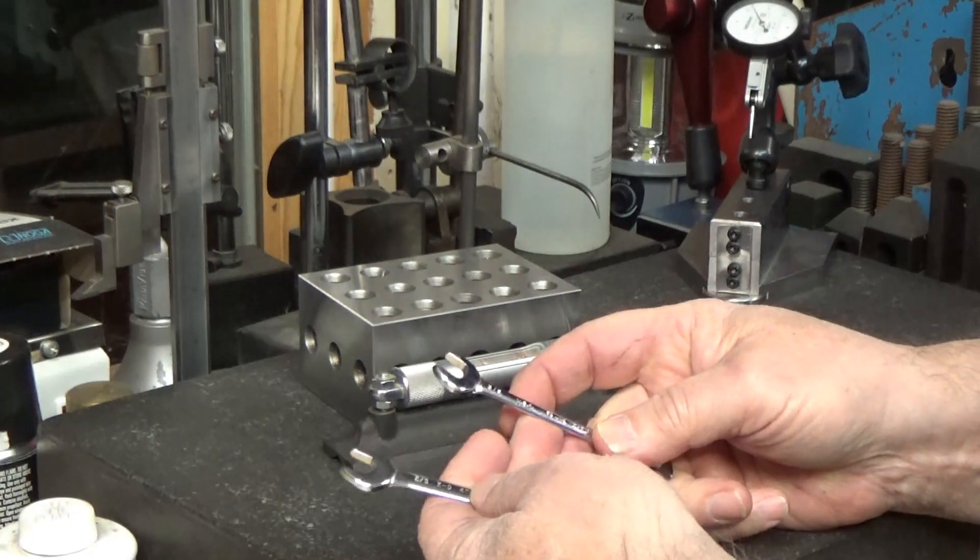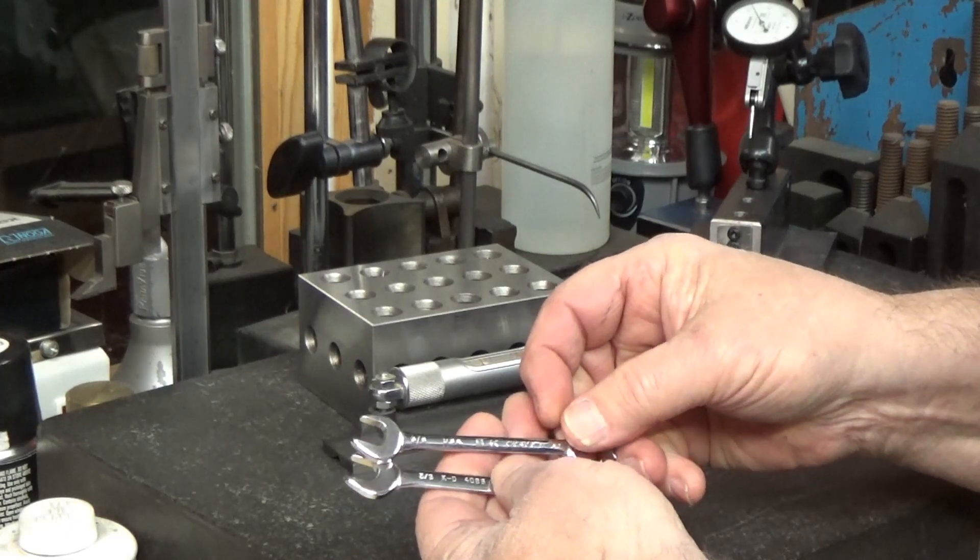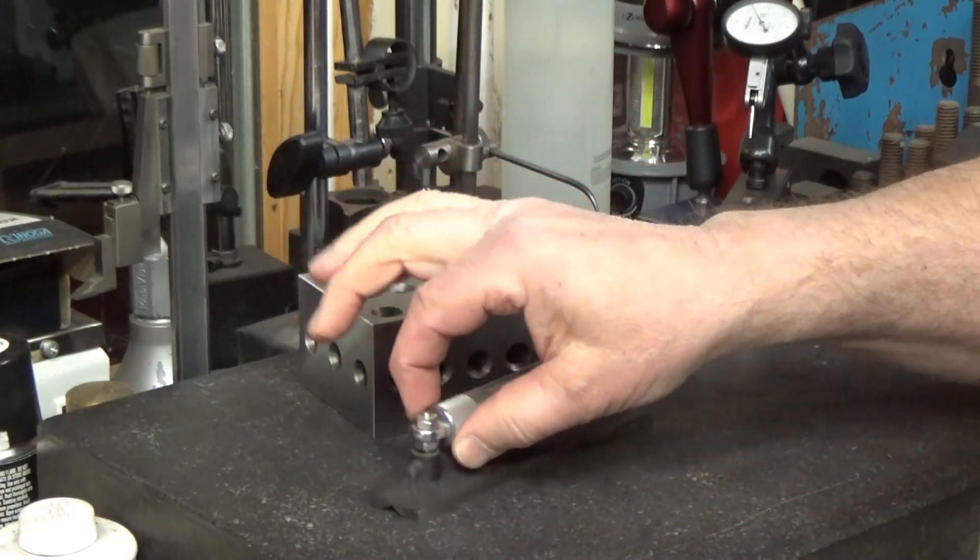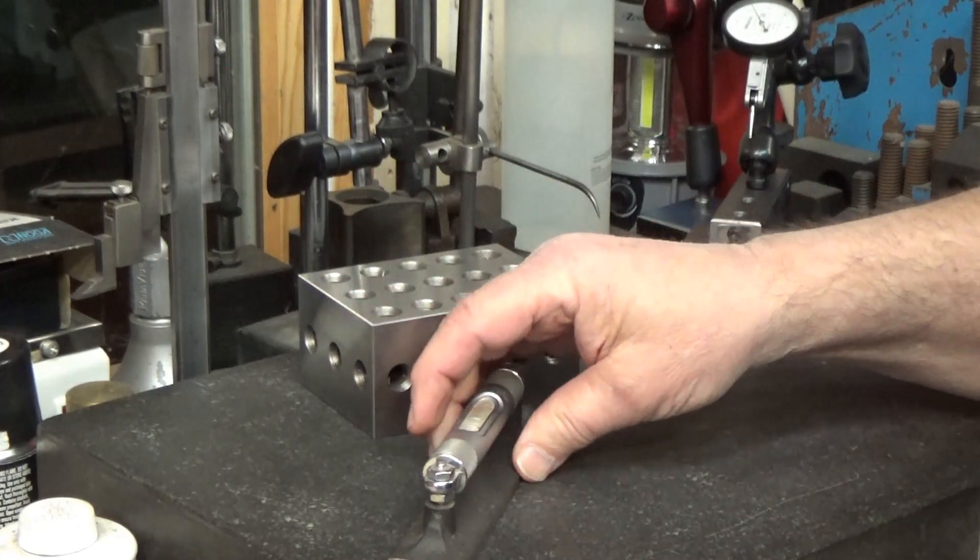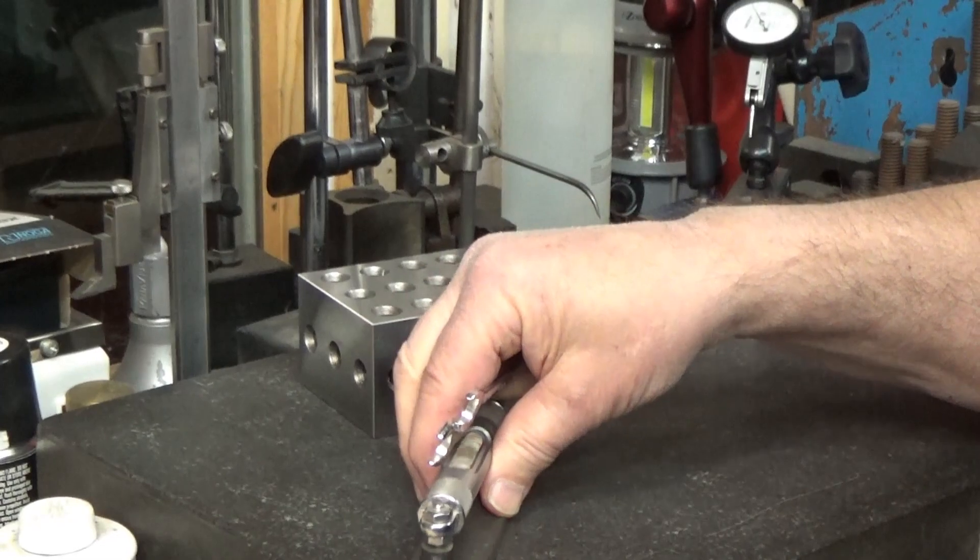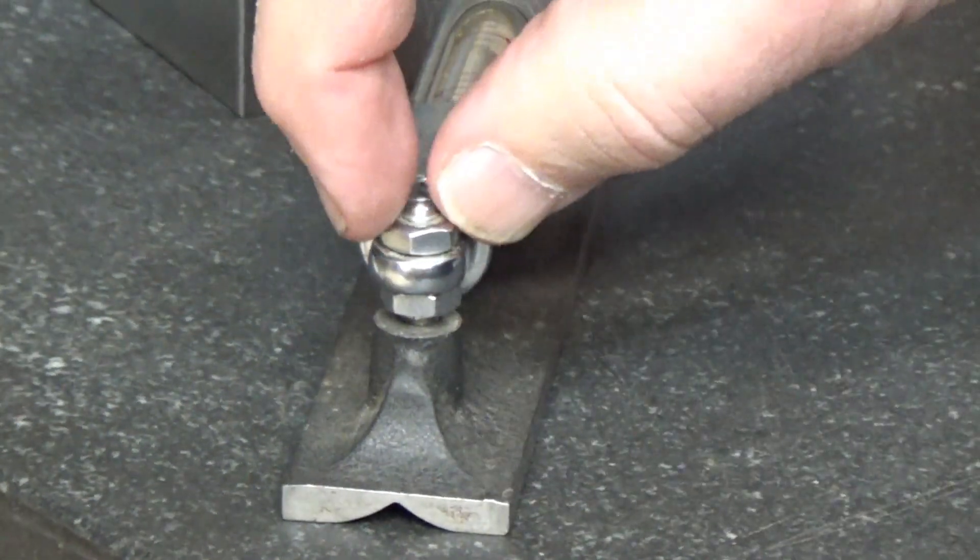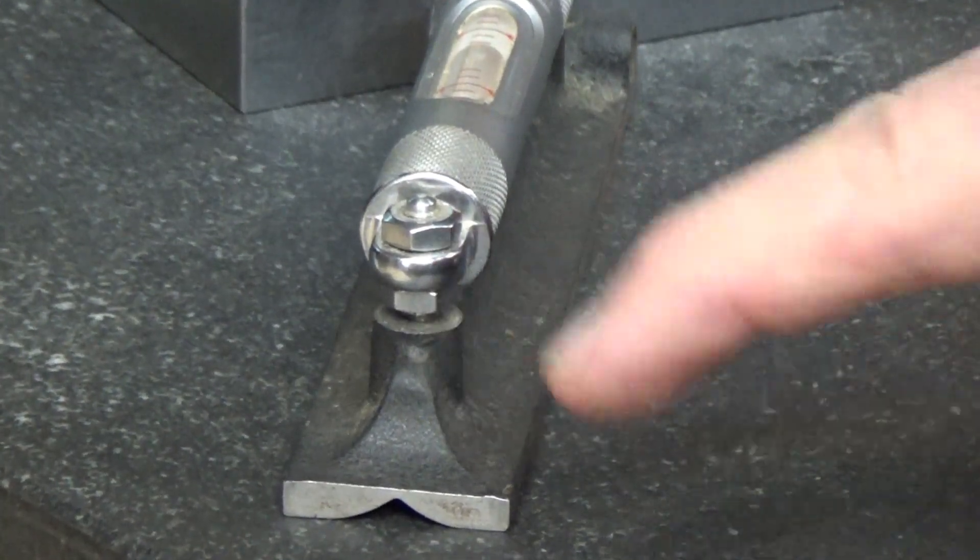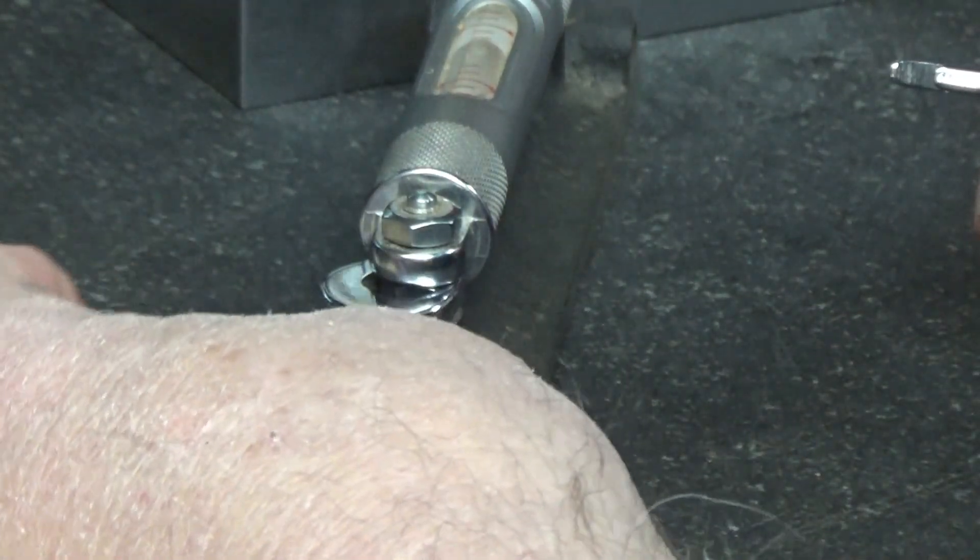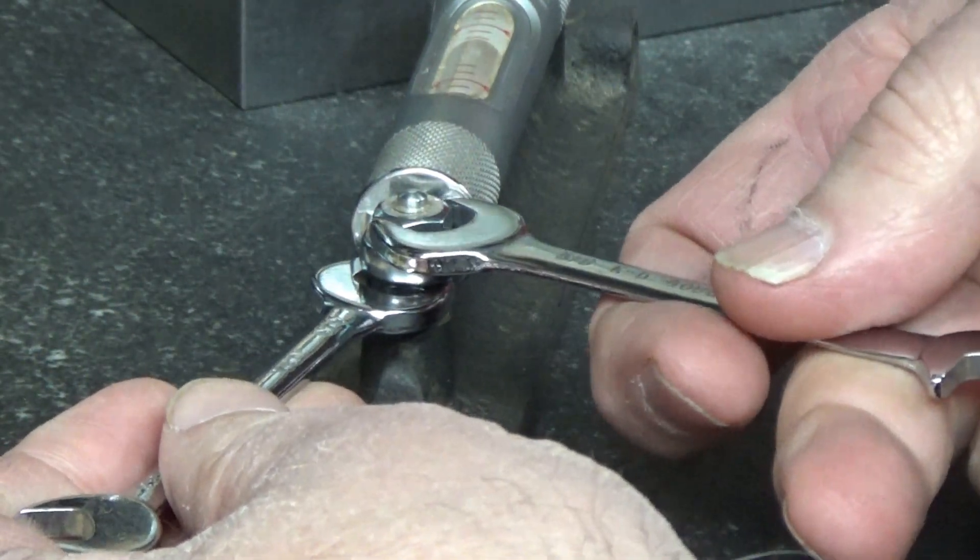I'll be using this little three-eighths ignition wrench for the adjustment. Let me bring you in closer so you can see the adjustment. It's adjusted by moving these two nuts. It's so sensitive that just by merely loosening the nut and then snugging the top nut will move it. We'll go ahead and get started.